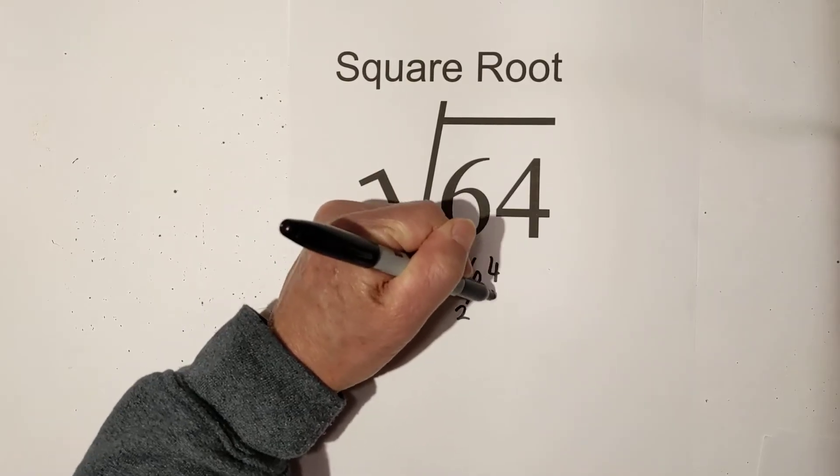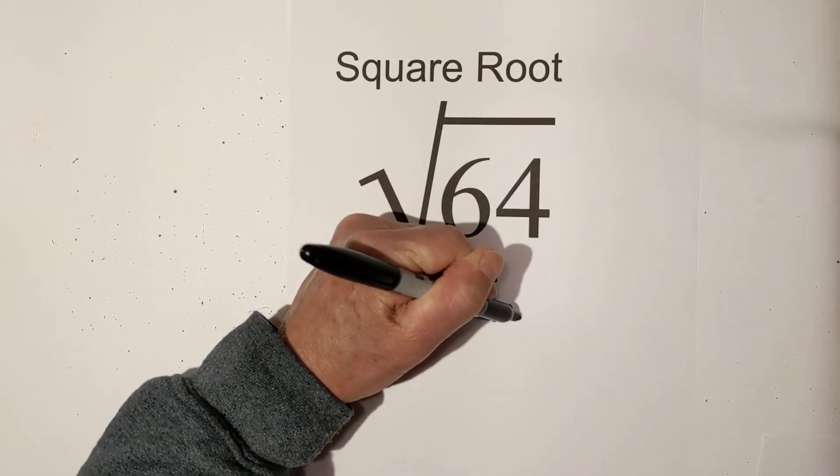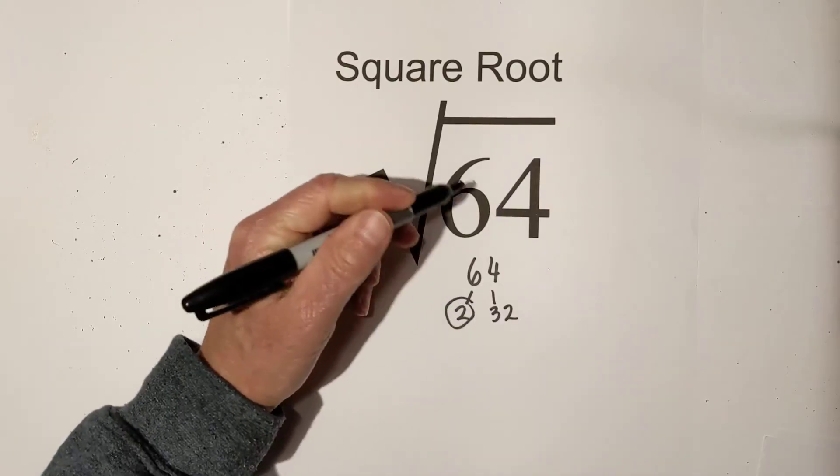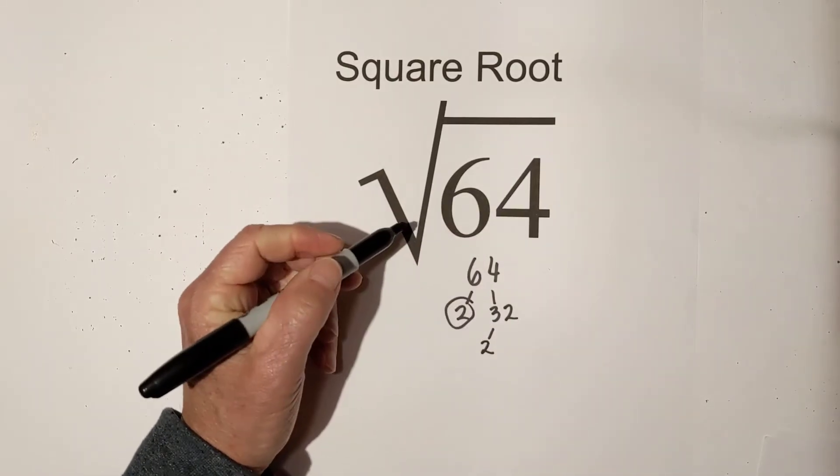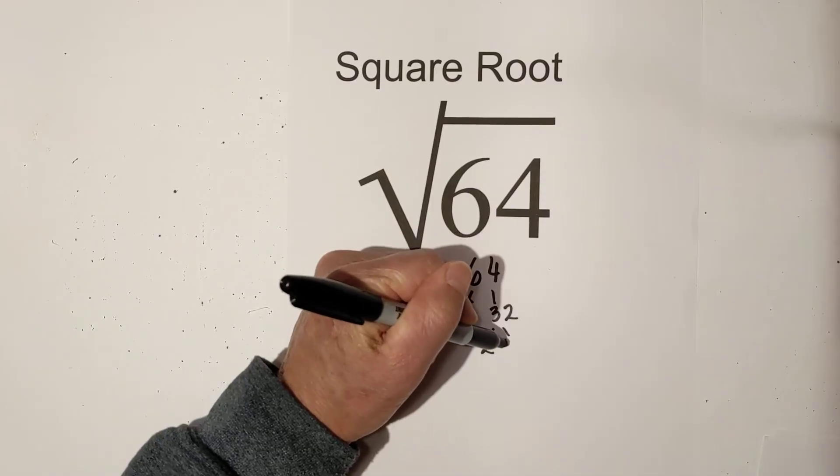So let's go 2 goes into 32. Circle the 2 because it is prime and then 2 into what is that? 16.